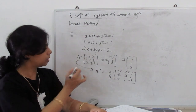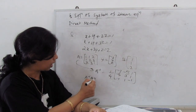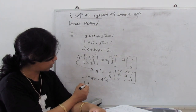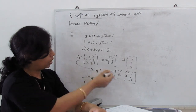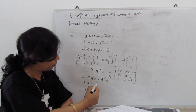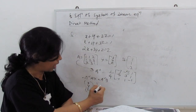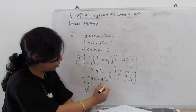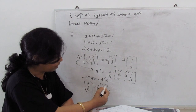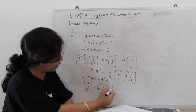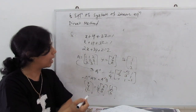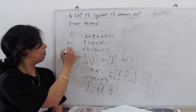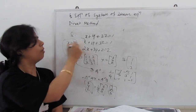Once we have A inverse, we compute X = A⁻¹·B. Here X is the column vector [x, y, z]. Multiplying A inverse by B, we get 1 over 4 times [4, 0, 0]. Simplifying, this gives [1, 0, 0]. So x = 1, y = 0, z = 0. This is the solution of the given equation by the matrix inversion method.